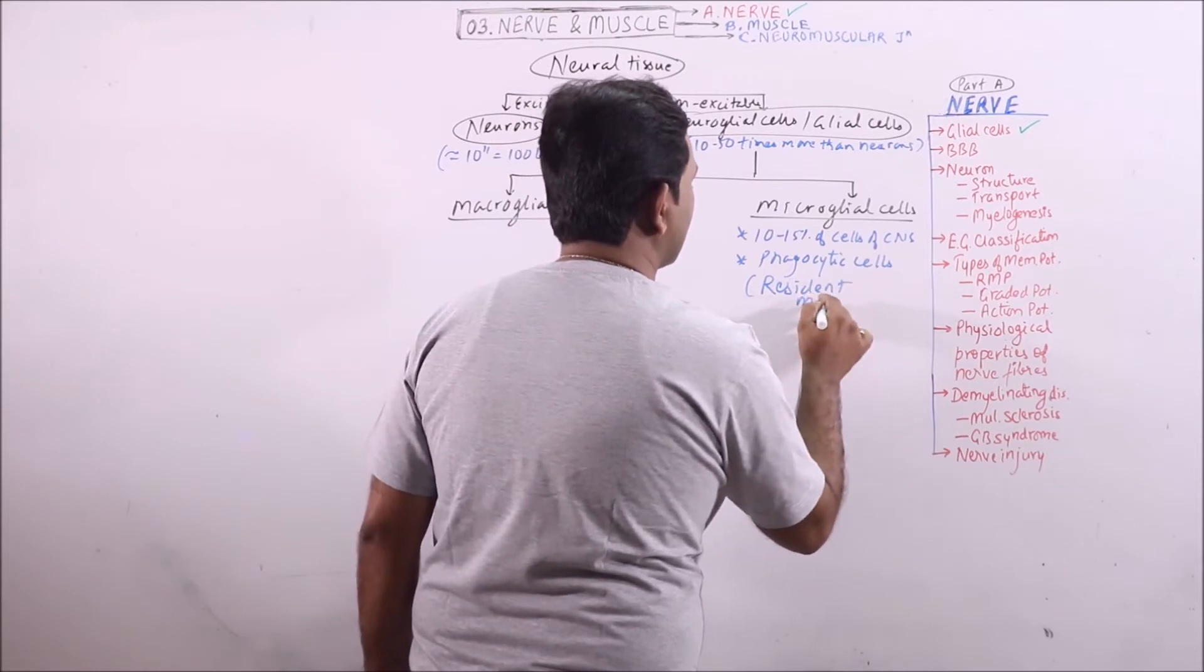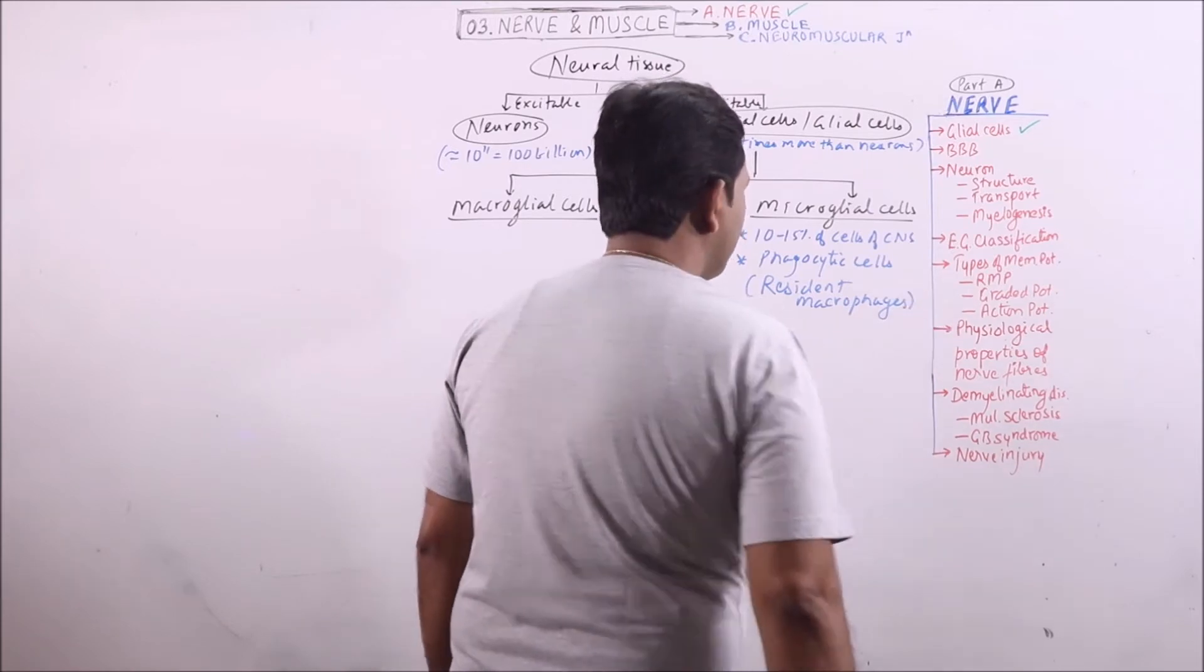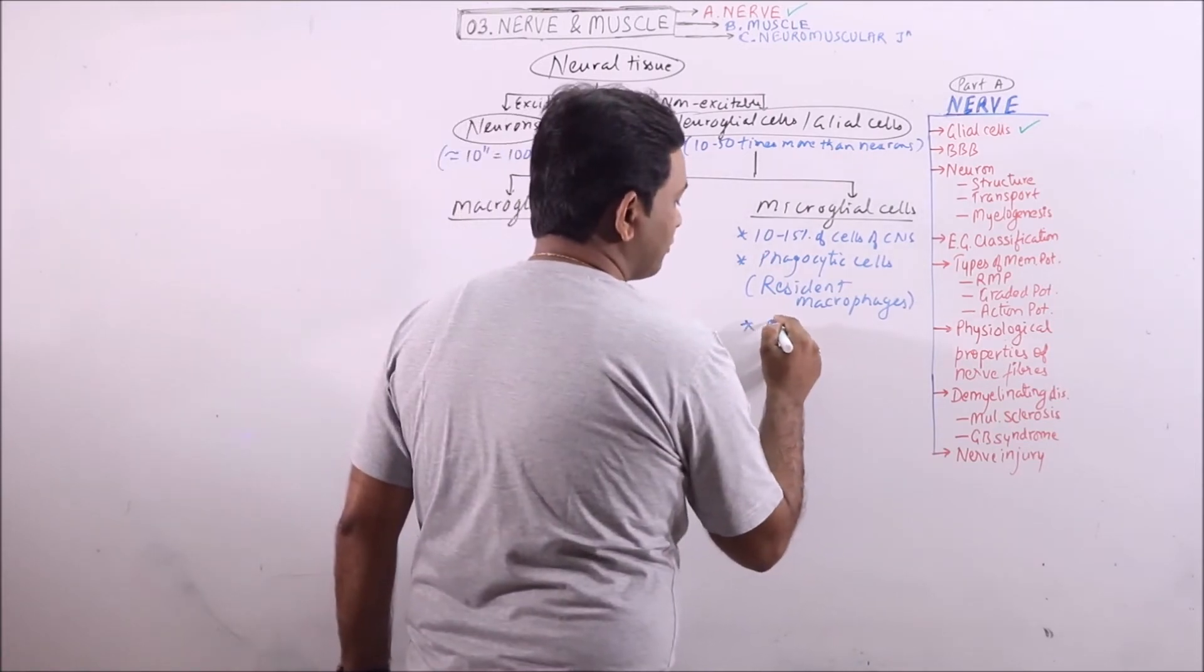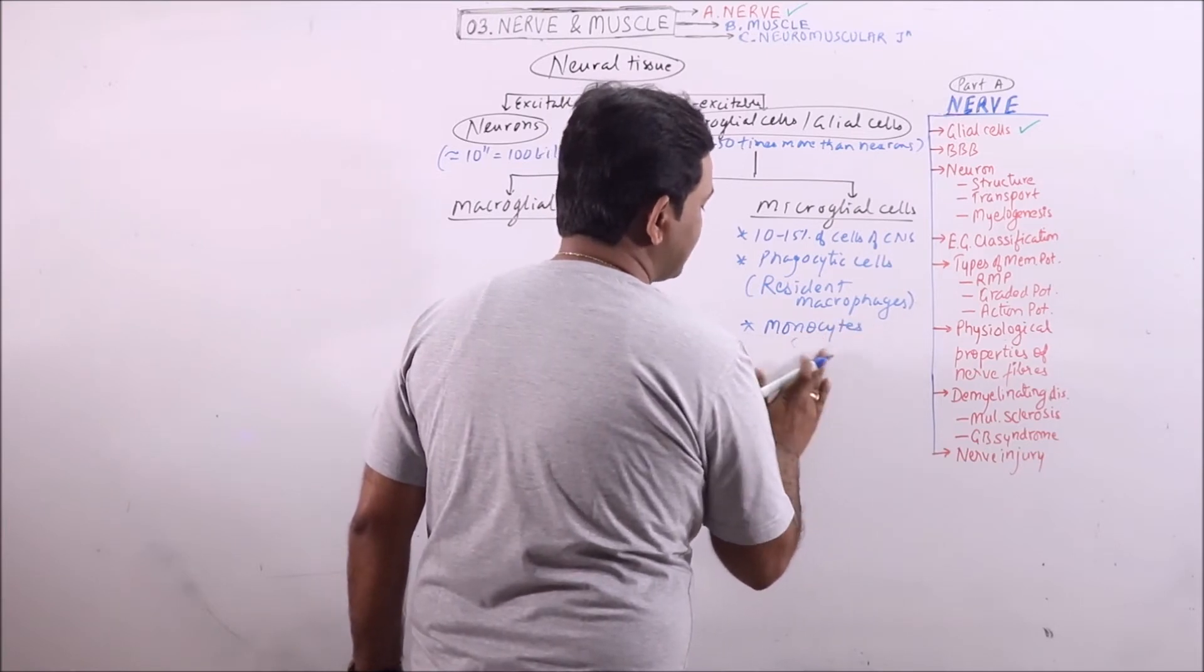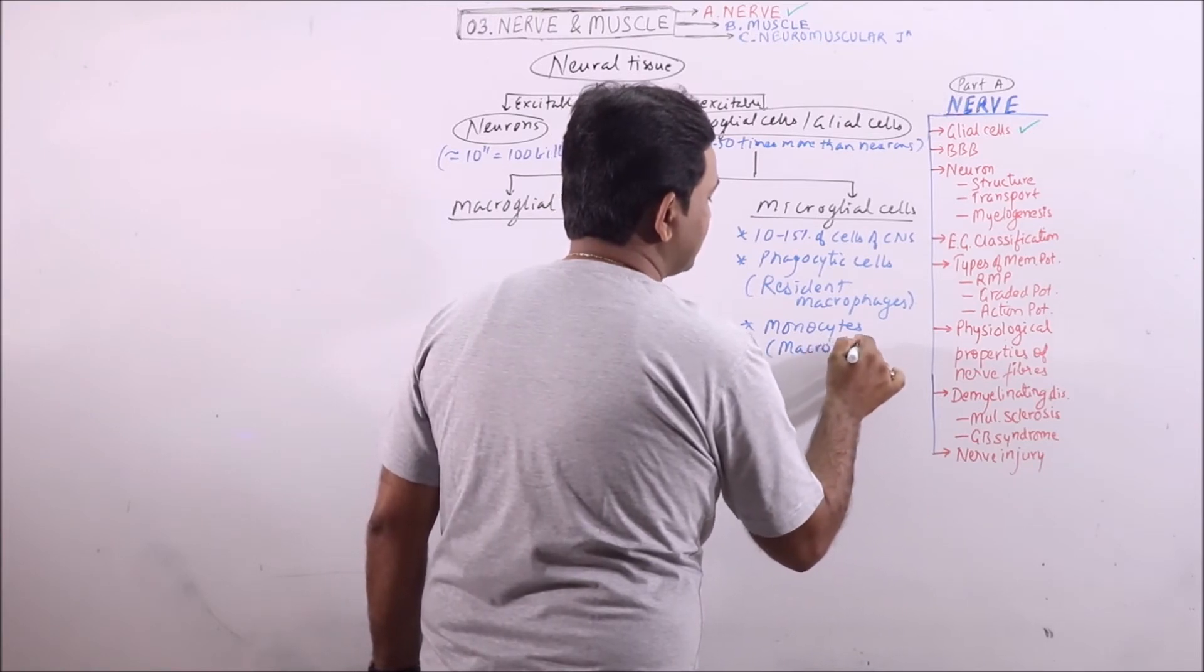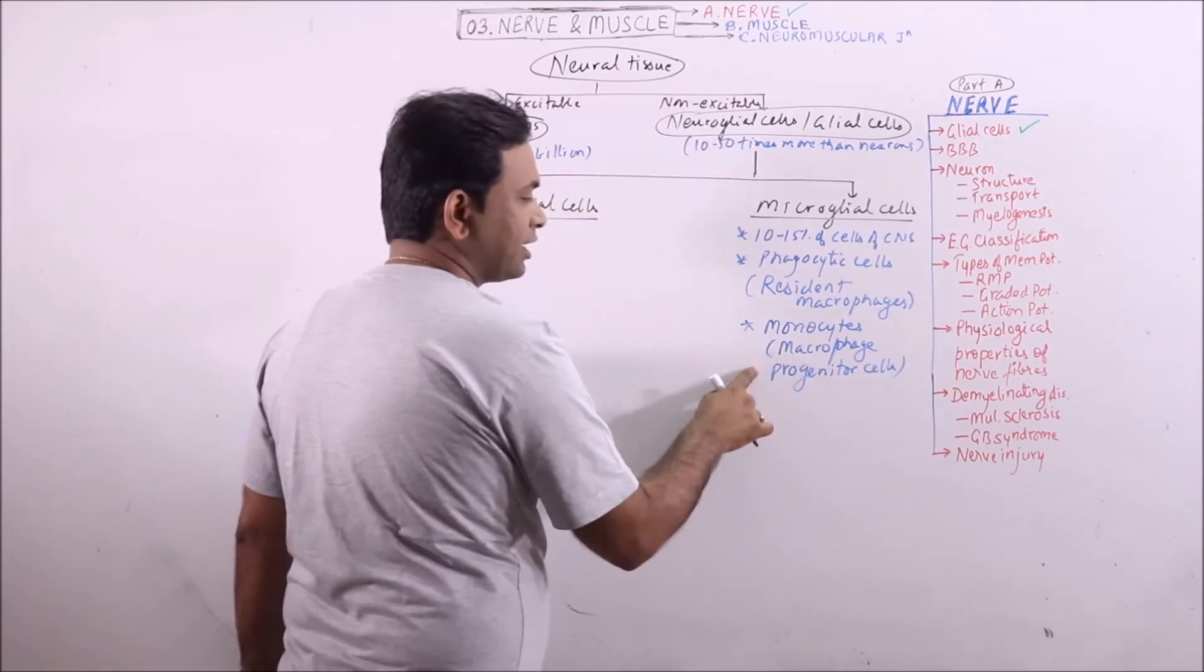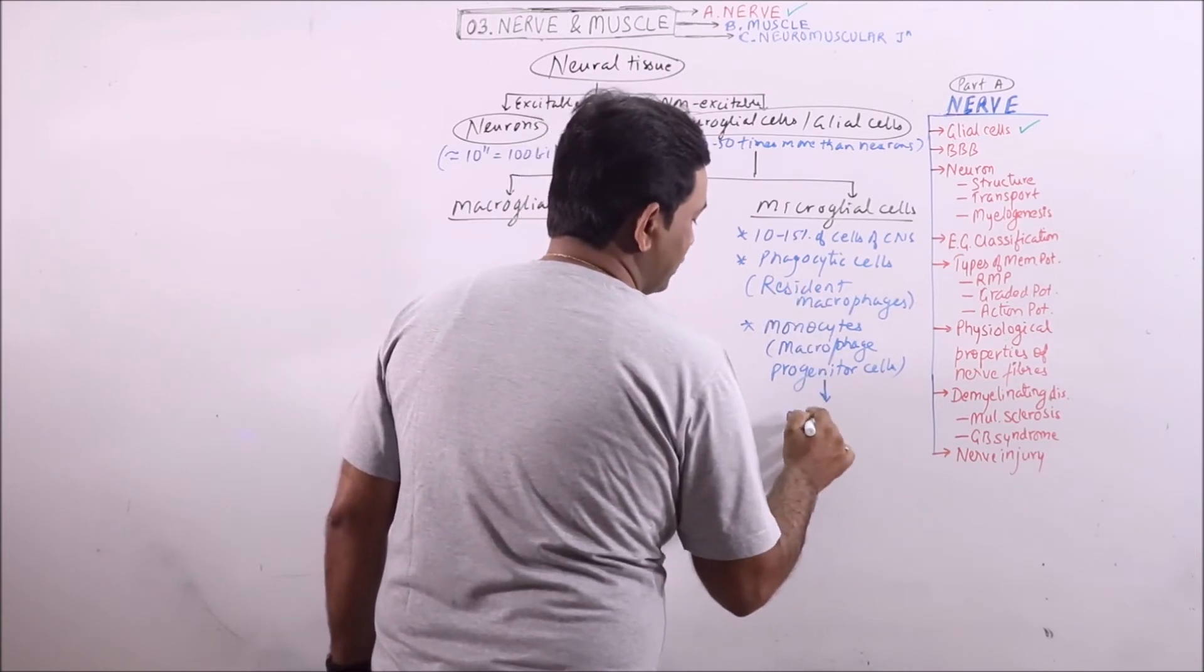These are resident macrophages. Previously it was thought that these phagocytic cells develop from monocytes. Monocytes are macrophage progenitor cells, so these are considered as macrophage progenitor cells for microglial cells.